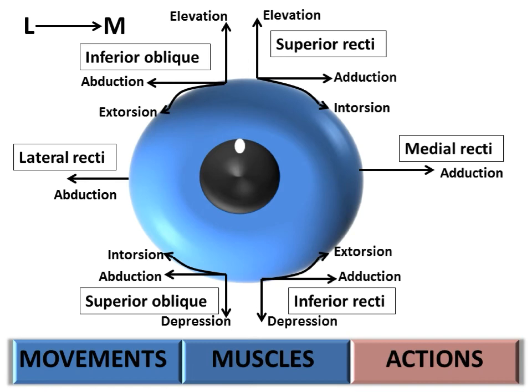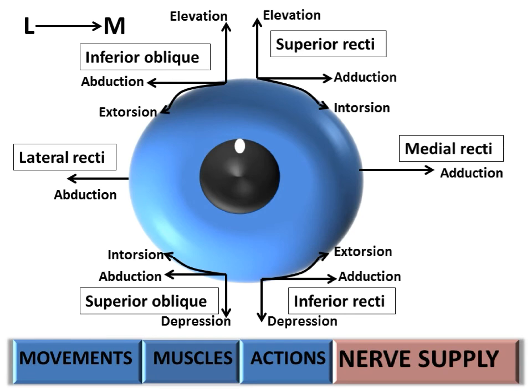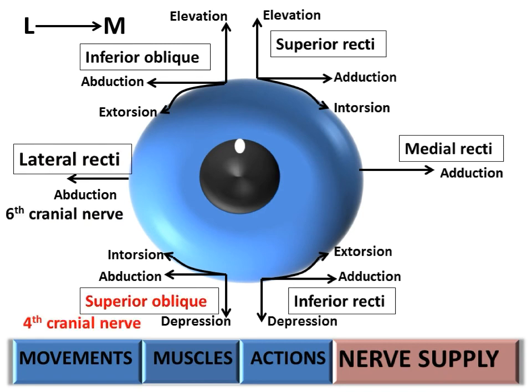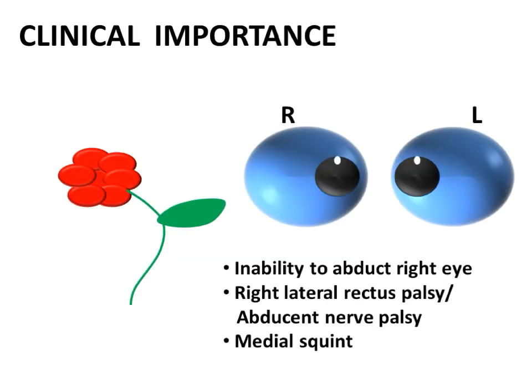The lateral rectus is supplied by the sixth cranial nerve, the abducent nerve. The superior oblique is supplied by the fourth cranial nerve, the trochlear nerve. All other muscles are supplied by the oculomotor nerve, the third cranial nerve. These cranial nerves have their origin from the midbrain and the pons, so from their origin till the place where they supply, if they get any lesion, it will be seen in the movement of the eyeball.